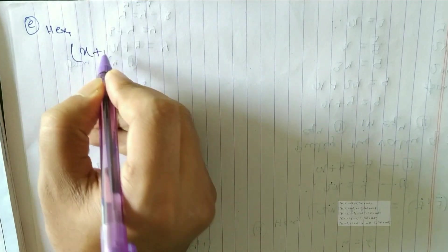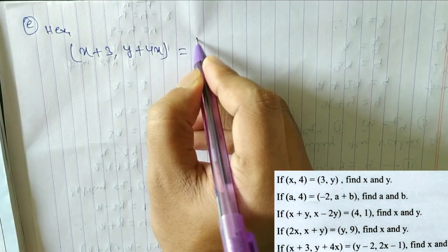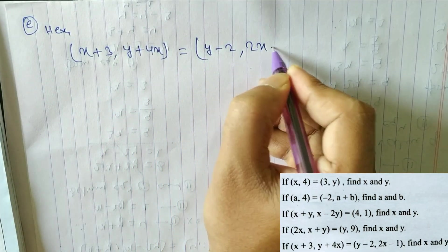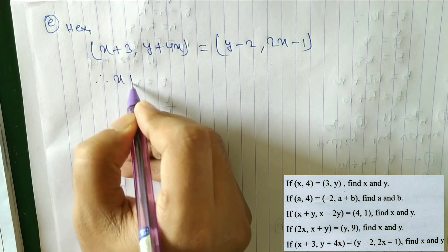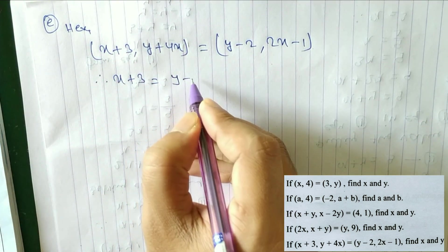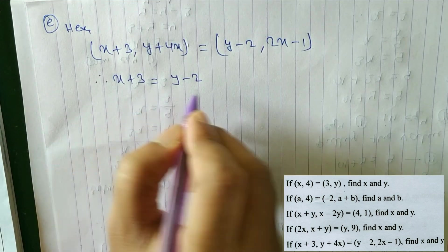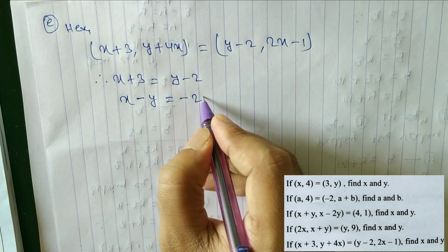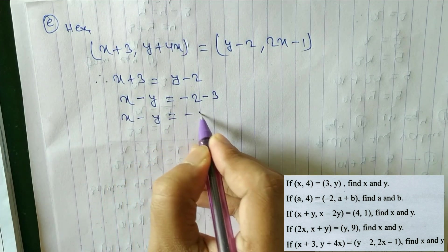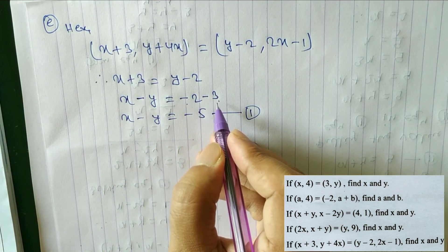Now question e. The ordered pair is (x+3, y+4x) equal to (y−2, 2x−1). From the x components: x plus 3 is equal to y minus 2. Rearranging: x minus y is equal to minus 5 — equation 1.